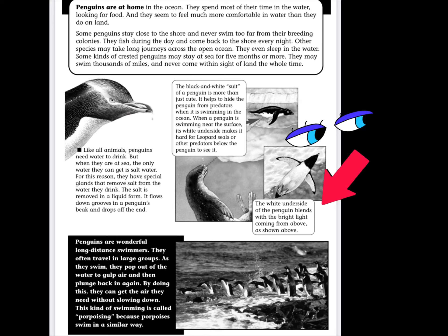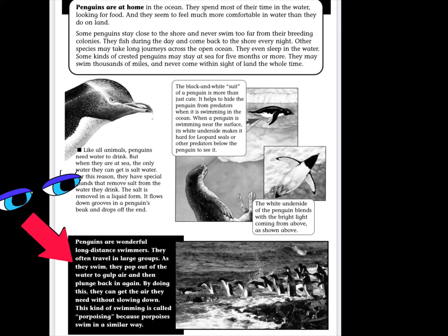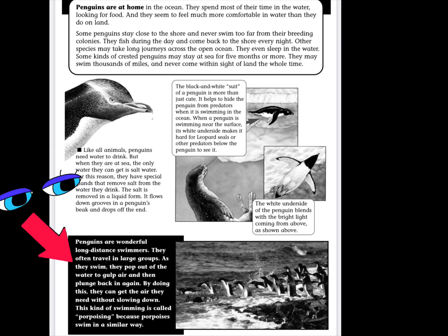This caption here says the white underside of the penguin blends with the bright light coming from above, as shown above. I do remember reading this in our previous lesson. And finally, the last caption on this page says: penguins are wonderful long-distance swimmers. They often travel in large groups as they swim. They pop out of the water to gulp air and then plunge back in again. By doing this, they can get the air they need without slowing down. This kind of swimming is called porpoising because porpoises swim in a similar way. I didn't know that either — very interesting.